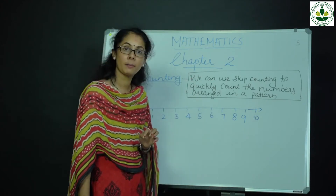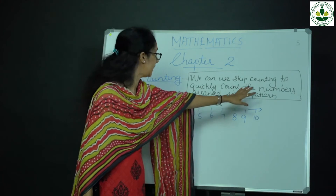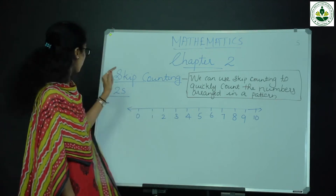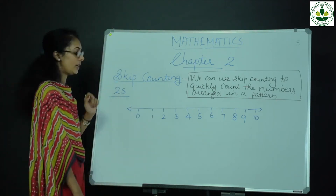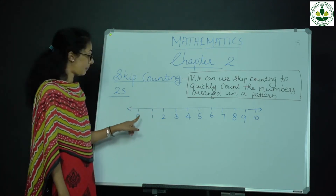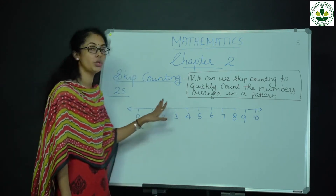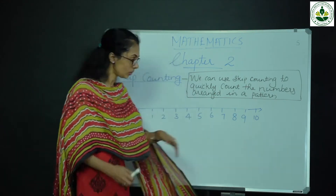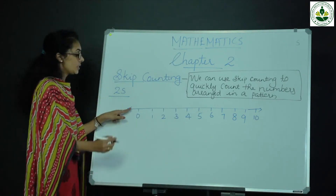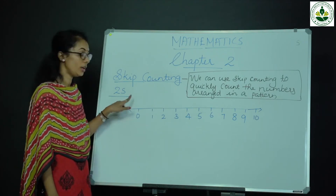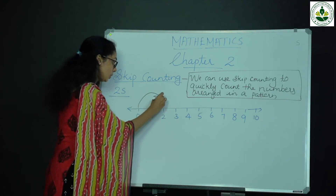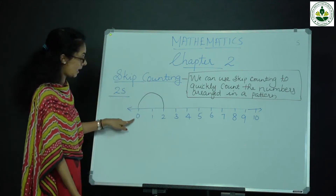First one is counting by twos. I draw a number line and mark numbers from 0 to 10. Starting from 0, I count two times: 1, 2 — so 0 to 2.